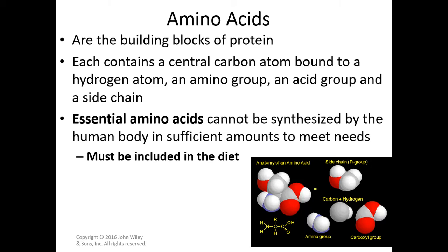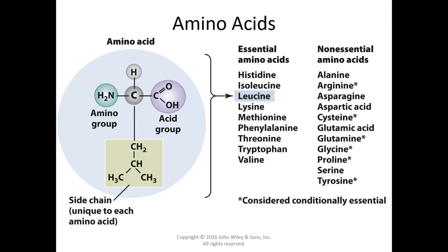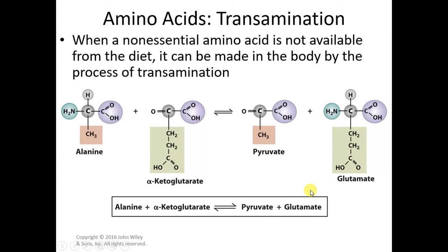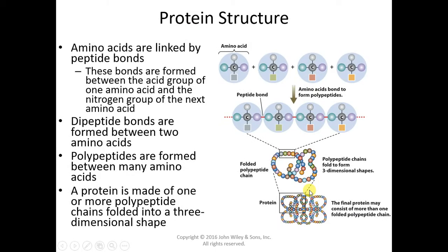Proteins are made of amino acids — some of them are non-essential, and some are essential. You do not have to know the names of each group for this test, but you should look at the structure of the amino acid and understand the importance of the side chain, because the sequence of amino acids, because of the side group, establishes the structure which establishes the function.